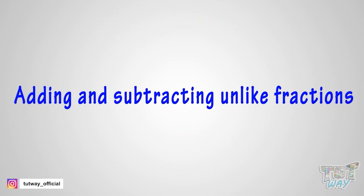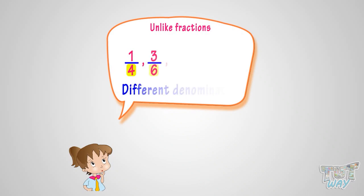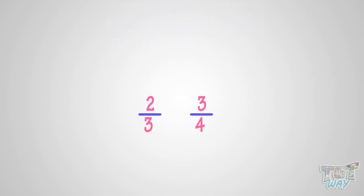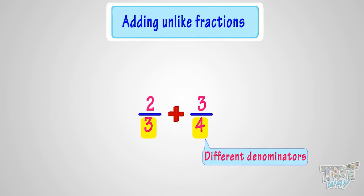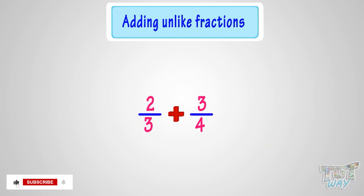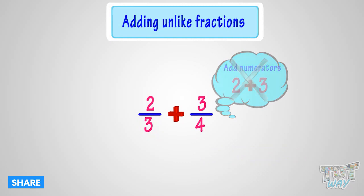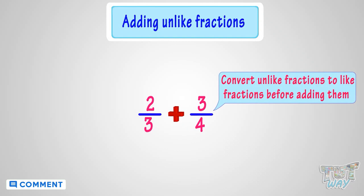Now let's learn how we do addition and subtraction on unlike fractions. Let's first learn what are unlike fractions. Fractions with different denominators are called unlike fractions. Here we have two unlike fractions, 2 by 3 and 3 by 4. Their denominators are different, so we can't add them directly by just adding their numerators. For adding unlike fractions, first we have to convert them to like fractions, that is we have to make their denominators same.